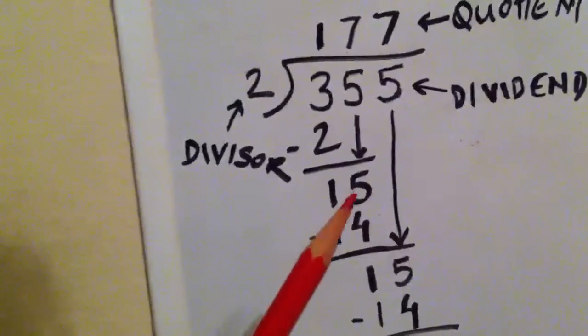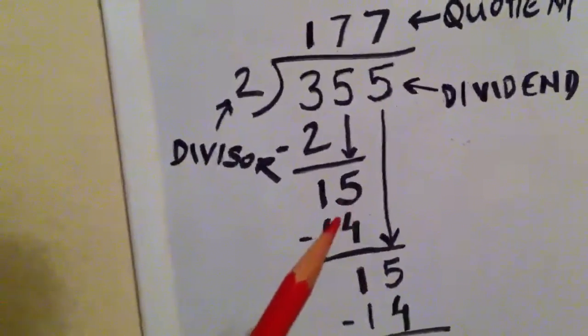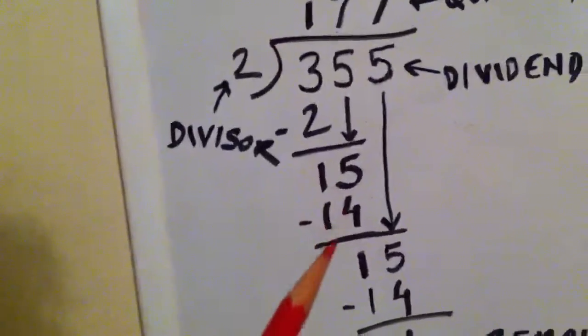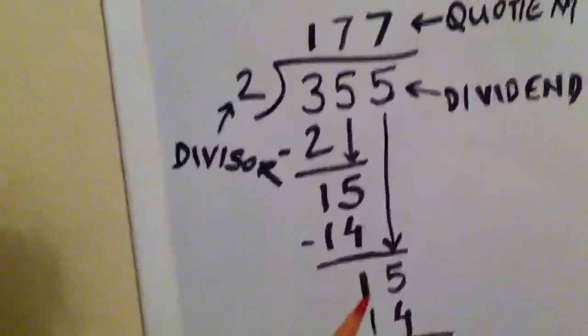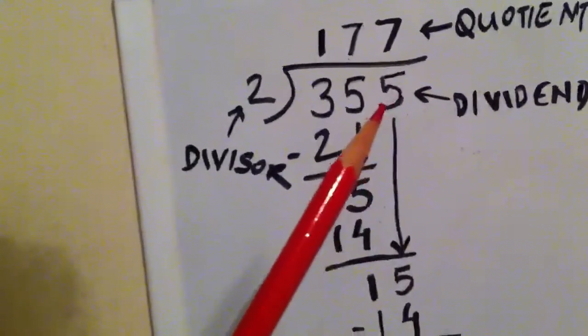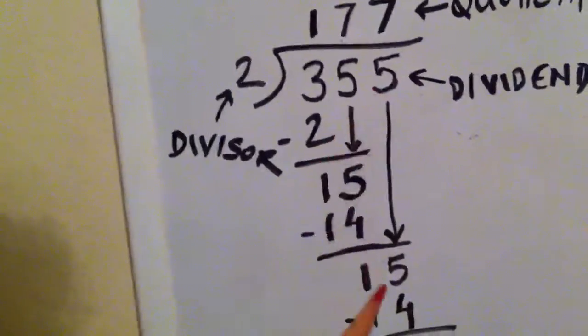So 2 times 7 is 14. Again we do a subtraction: 15 minus 14 is 1. Again, 1 when you say the 2 times table, we don't get 1, so we bring the next number, the next digit, down.